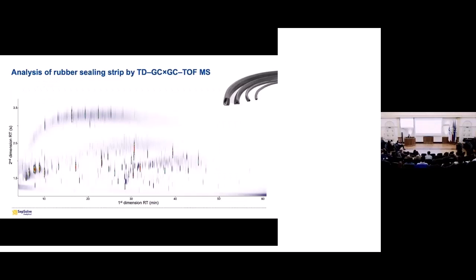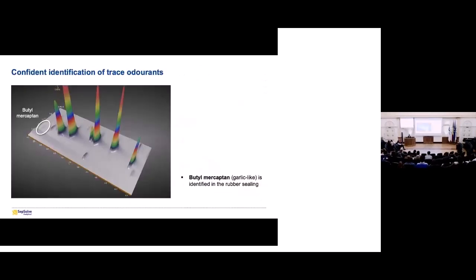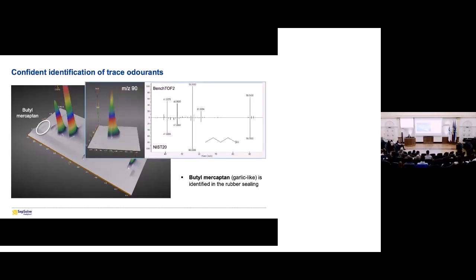And just to take a quick look at the rubber one, in this example, this is where the odor aspect came in. Because if we zoom in at the front end, where there's a lot of the very volatile components, we can see we've got this peak at the beginning here, which was identified as butyl mercaptan. And that has a really undesirable garlic odor, which you don't want to be present in the cabin of your vehicle. So having that flow modulation to be able to look at the volatiles and identify these compounds is really important.